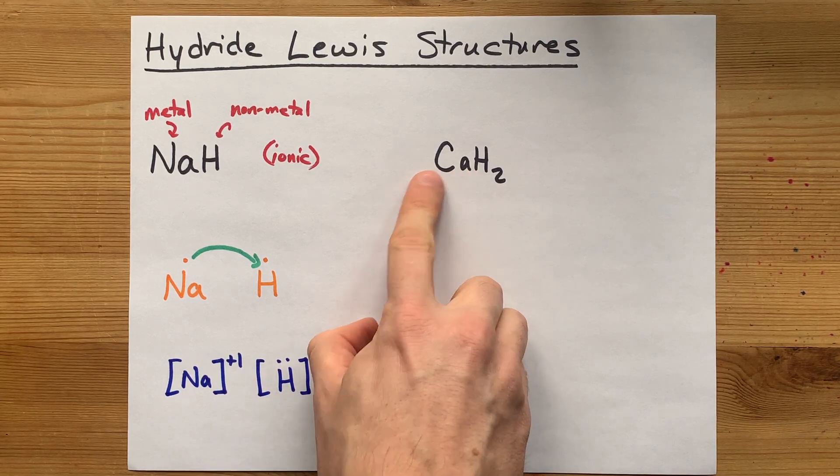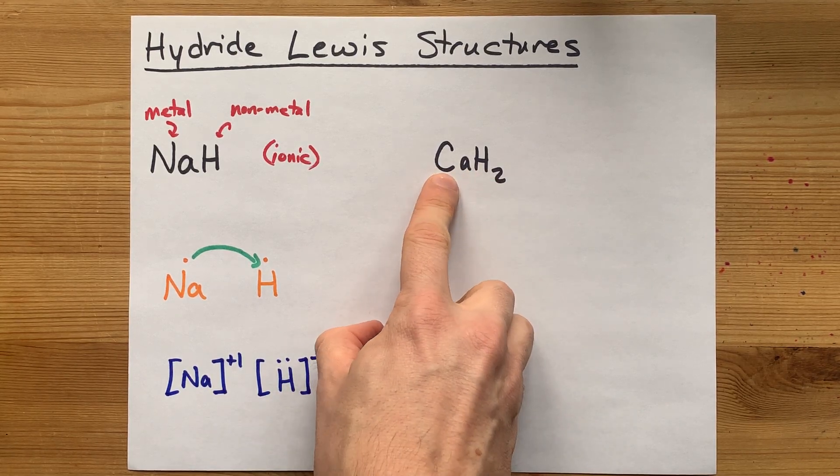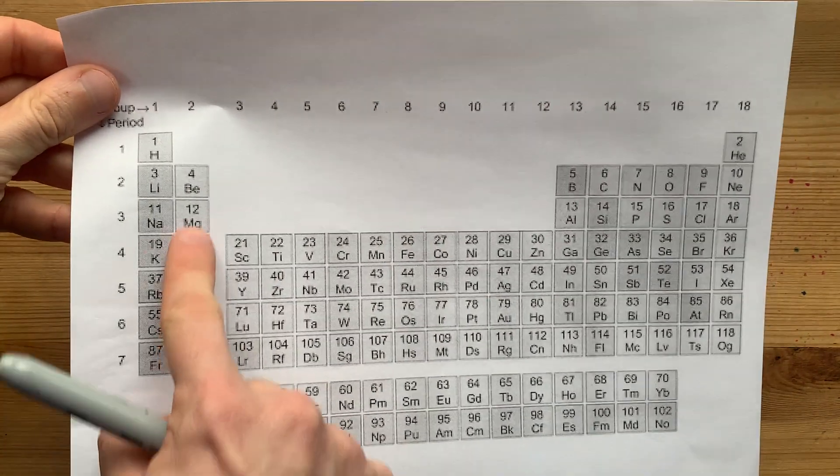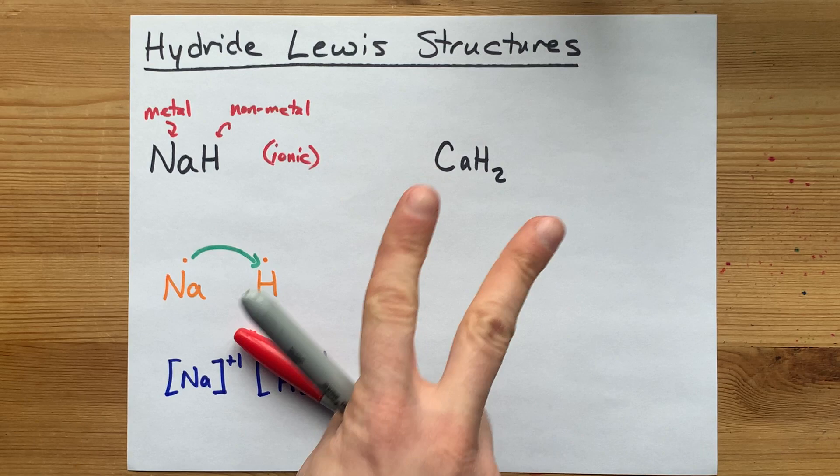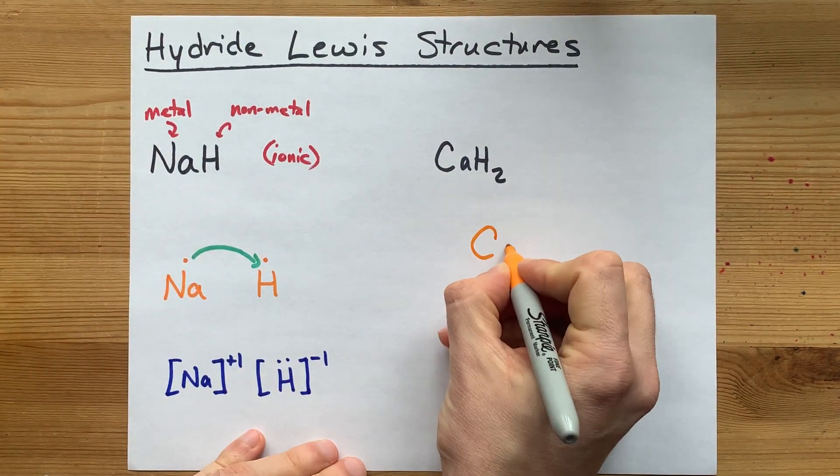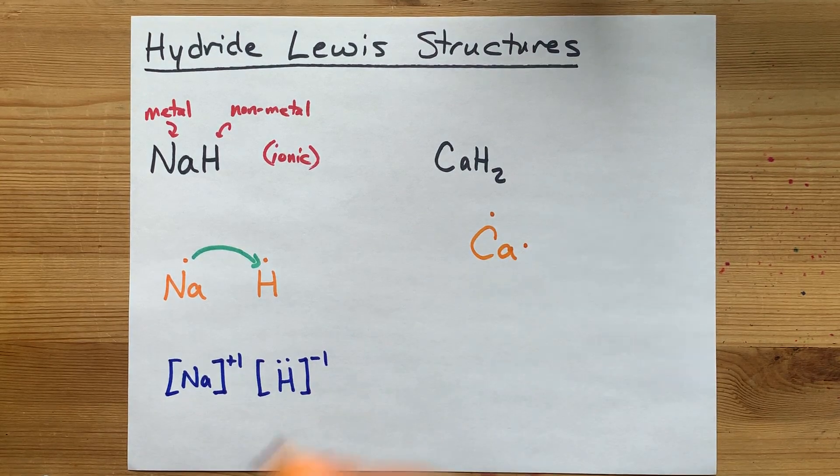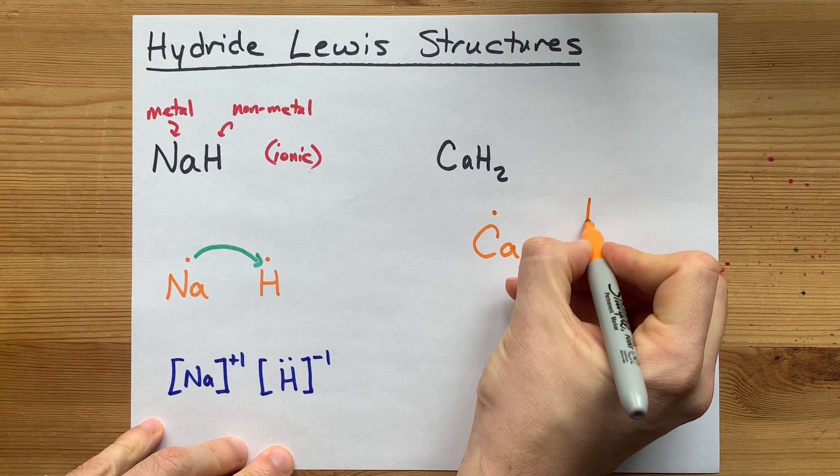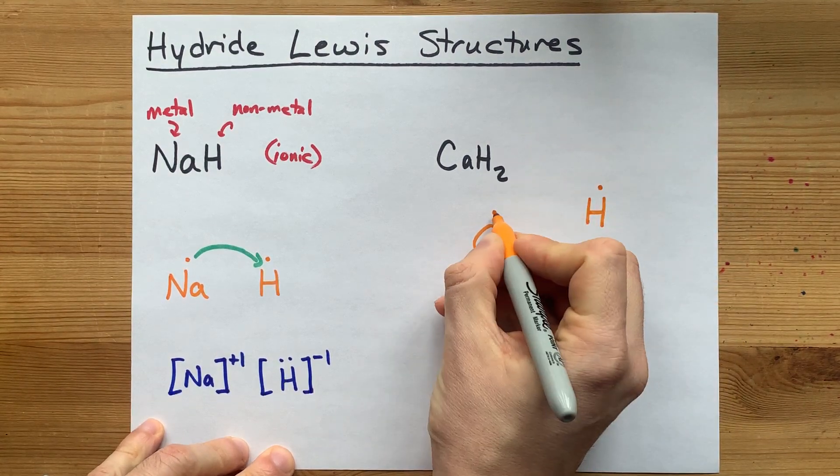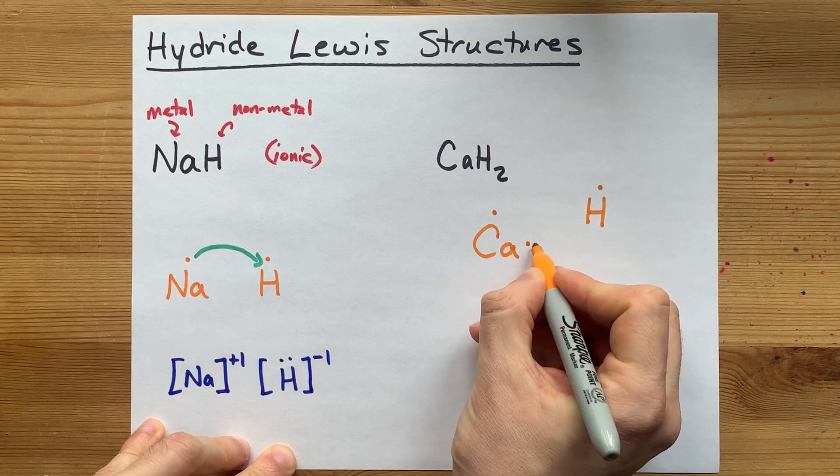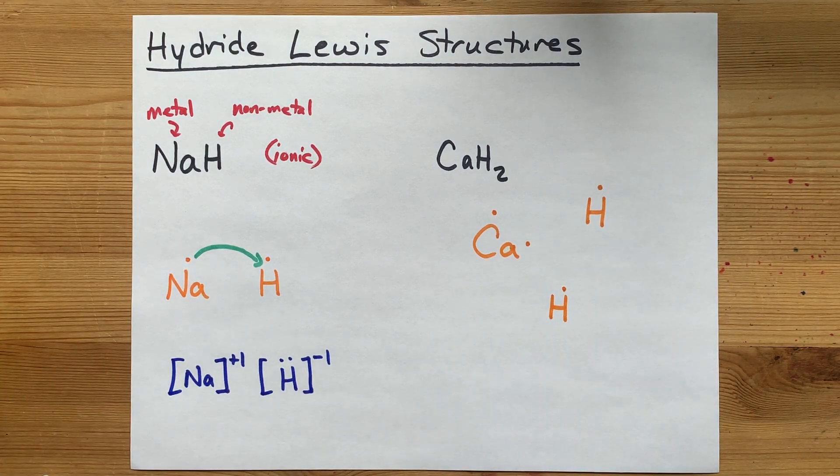Now, that can occur with other metals as well, like calcium hydride. Calcium is in group 2 of the periodic table, so it brings two valence electrons with it. Ca, 1, 2. And since hydrogen is bringing one electron each, it might not be a surprise that you need one hydrogen for that electron and another hydrogen for that electron to join.